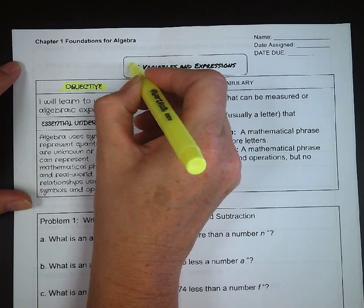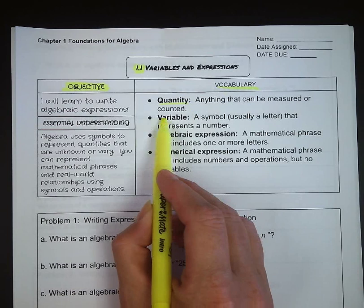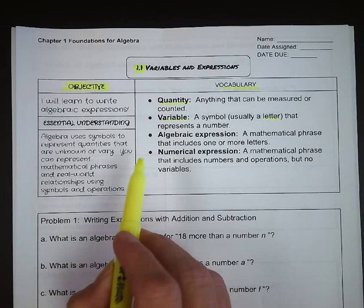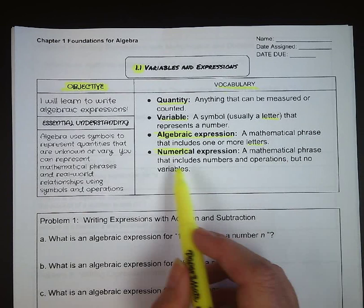First of all, the word quantity, that is anything that can be measured or counted. A variable is a symbol, usually being a letter, that represents some number. Algebraic expressions is a mathematical phrase that includes one or more letters. And a numerical expression is a mathematical phrase that includes numbers and operations, but no variables.